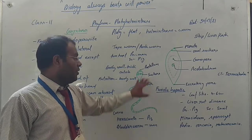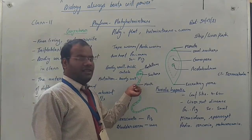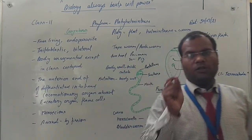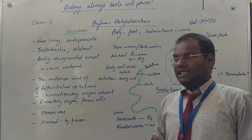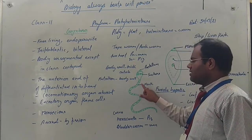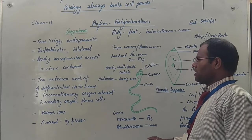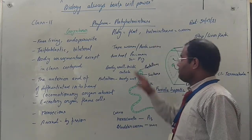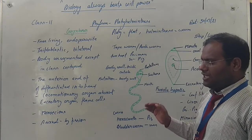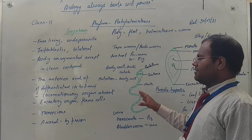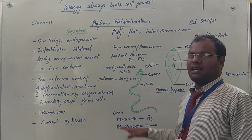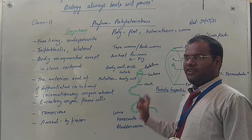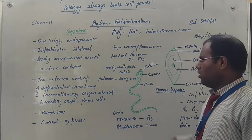These are not true segments. A special feature is that each segment of Taenia solium consists of both male and female reproductive organs. In each segment, all organs are present. In phylum Platyhelminthes, organs are mainly hermaphrodite, meaning male and female reproductive organs are present on the same body.